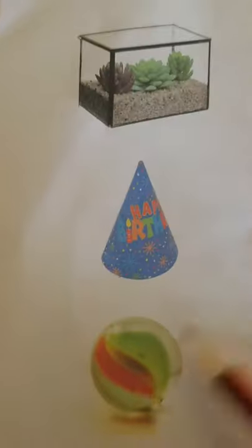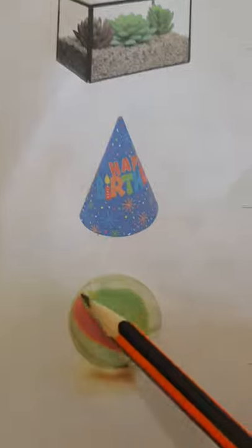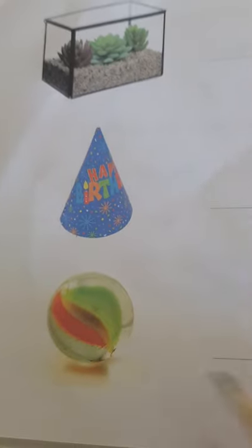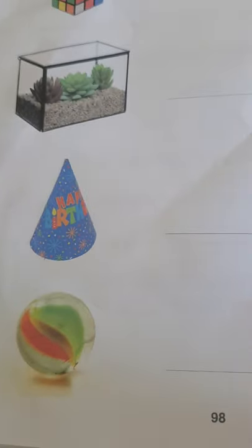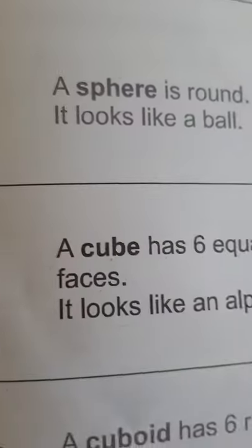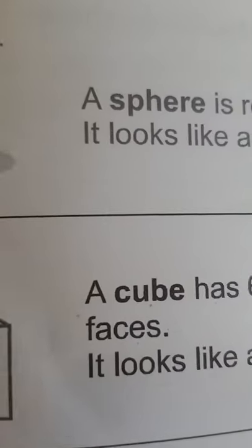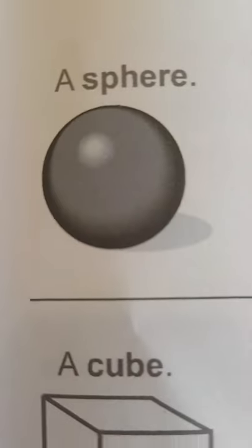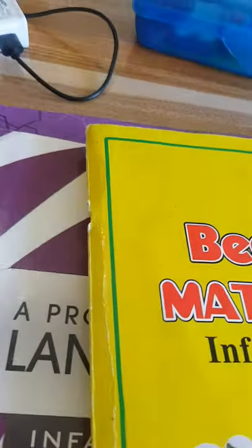And here we have something that's round but it's not flat. It's a marble, just like a ball — round but not flat. And that's called a sphere. What is it? A sphere.